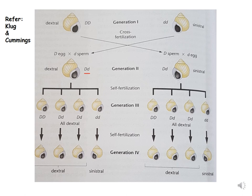Klug and Cummings show the phenomenon across generation one through four. In the first cross, F1 is dextral because the mother is dextral; in the second cross, F1 is sinistral because the mother is sinistral. In generations three and four, the progeny depend on the genotype of the mother, not her phenotype — in both crosses the mother's genotype is heterozygous (D/d) so progeny are dextral. You can also refer to Snustad and Simmons, and Griffiths. Thank you and see you in the next lecture.